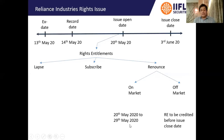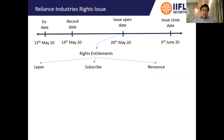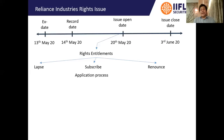For on-market transactions, remember 29th May is the last day to buy or sell rights entitlements. For off-market transactions, make sure any rights entitlements you've bought are credited in your account before the issue closure date. Now if instead of renouncing you want to subscribe to the shares being offered by the company, let's talk about the application process for this rights issue.